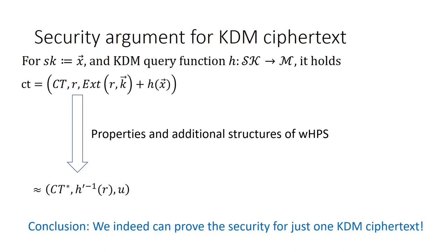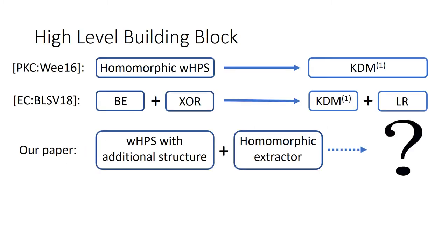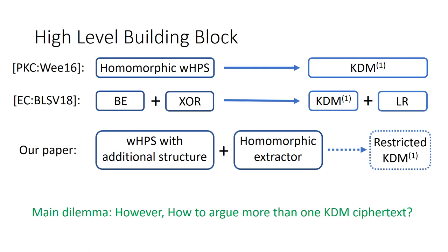So we get a conclusion: we can indeed prove the security for just one KDM ciphertext. Clearly, from WGPS and the homomorphic extractor, a restricted KDM-1-security scheme can be constructed. However, the above proof technique can only support one KDM query, as its indistinguishability relies on entropy of the secret key, and we cannot ensure enough entropy for more than one KDM ciphertext. So we need to conquer this dilemma: how to argue the normal KDM security for the above basic construction.